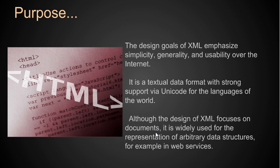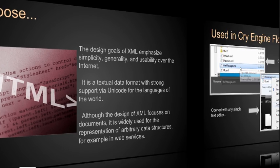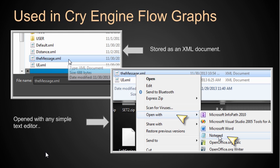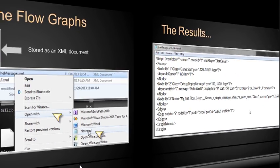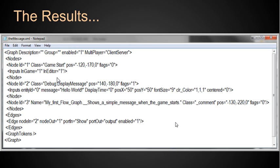If you recall from around lecture three, XML is used to store CryEngine flow graphs. We made a flow graph, called it the message XML, and it was stored as an XML document by the CryEngine. I demonstrated that you could open it with any simple text editor — we right-clicked, said open with Notepad. When we opened it with Notepad we got this human readable code. You might say you can read it but don't understand it — that's okay, but that's the point: it is human readable. Graph and description, it's all in English, and there we have 'hello world' — that was the message displayed — and this was the comment we had.